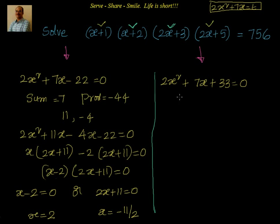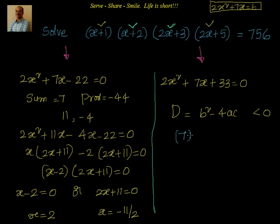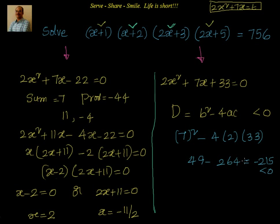For the second quadratic equation, 2x square plus 7x plus 33 equal to 0, we first check the discriminant: b square minus 4ac equals 7 squared minus 4 into 2 into 33, which is 49 minus 264, equal to minus 215, which is less than 0. So there are no real roots from this equation.